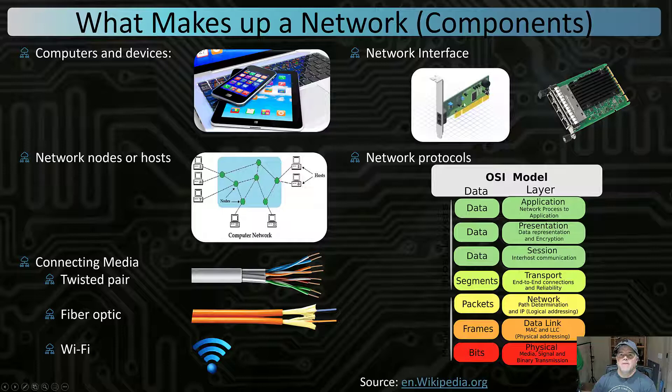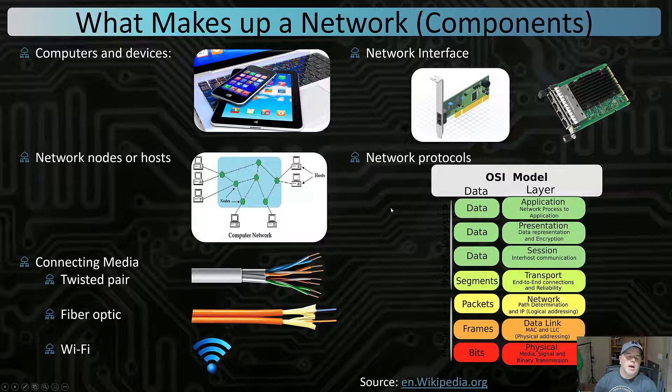As we look at network interface cards, there are a couple of different types: wired and wireless. I've given two examples of wired network interface cards. The one with more ports would be for a server so that we can create redundancy, team them together, create faster throughput, et cetera. The way all of these connect is through some sort of cabling or, as we know today, wireless.